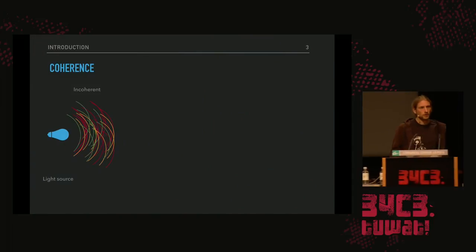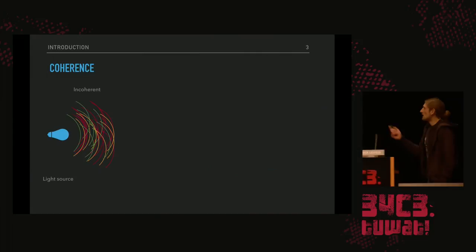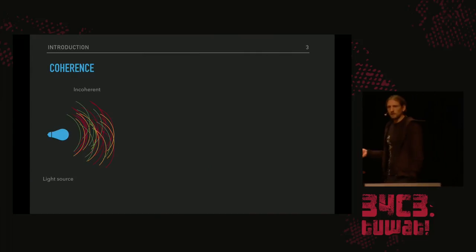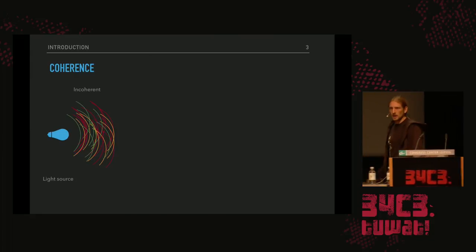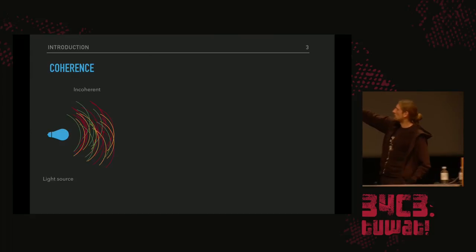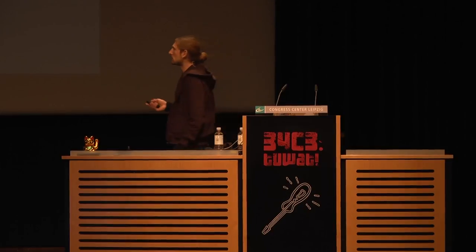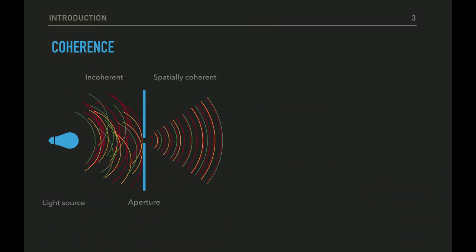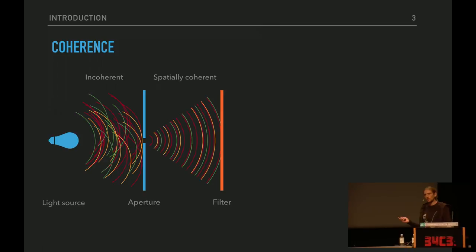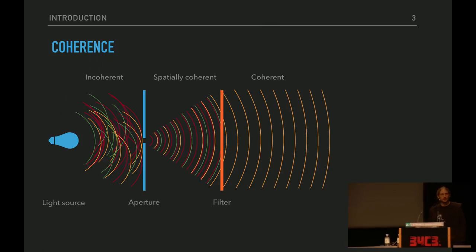Wir machen dann zum Beispiel Röntgenbeugung. Bevor ich erkläre, wie es funktioniert, möchte ich euch ein bisschen über Kohärenz erklären. Eine ganz normale Lichtquelle schenkt Licht in verschiedenen Wellenlängen aus, ohne fixierte Phasenrelation – das nennen wir inkohärentes Licht. Wenn ich eine Apertur platziere, dann strahlen die Wellenfronten so, als ob sie von einer Punktquelle emittiert werden – das nennen wir räumlich kohärente Wellen. Legt man noch einen Filter dazwischen, der nur eine Wellenlänge durchlässt, dann nennen wir das kohärent.